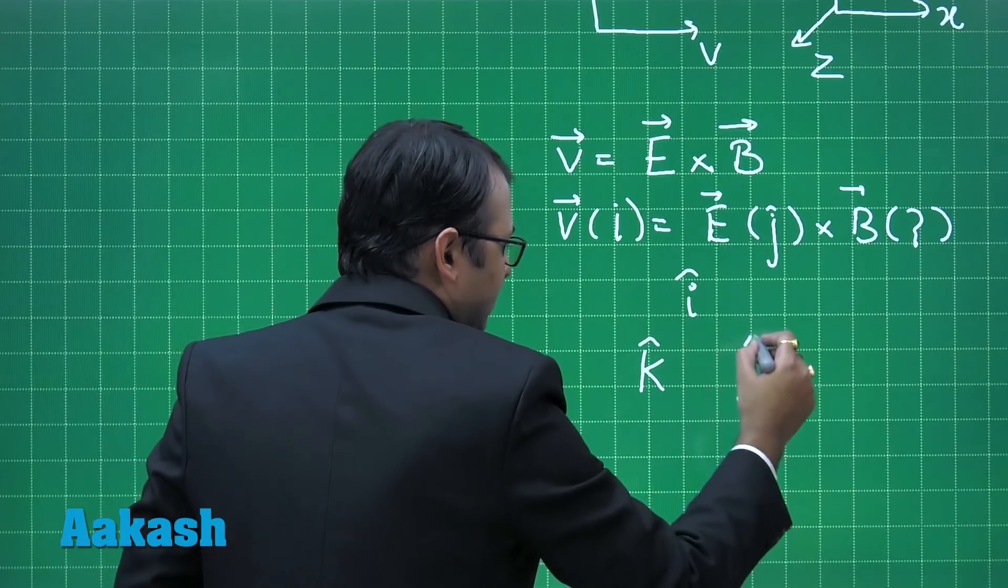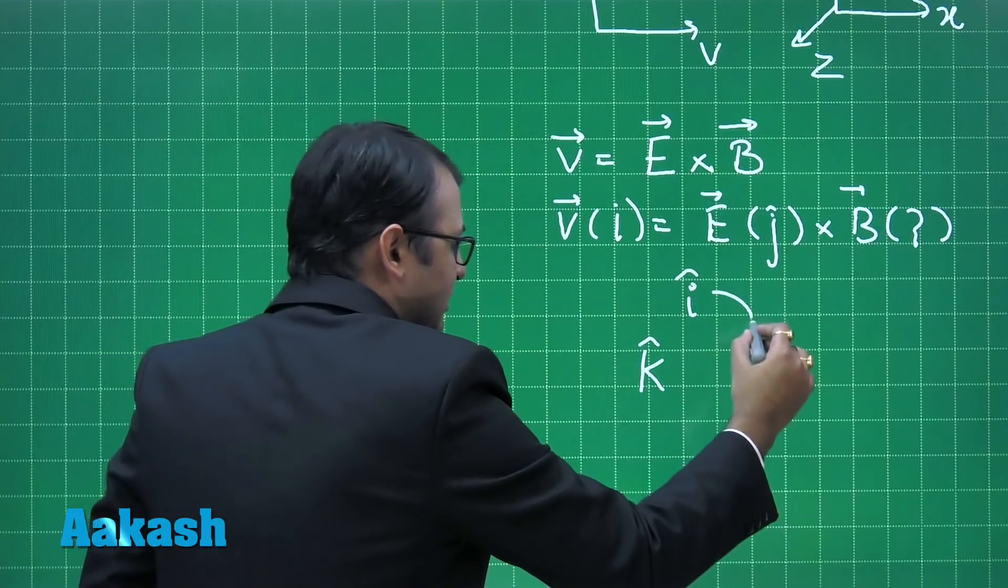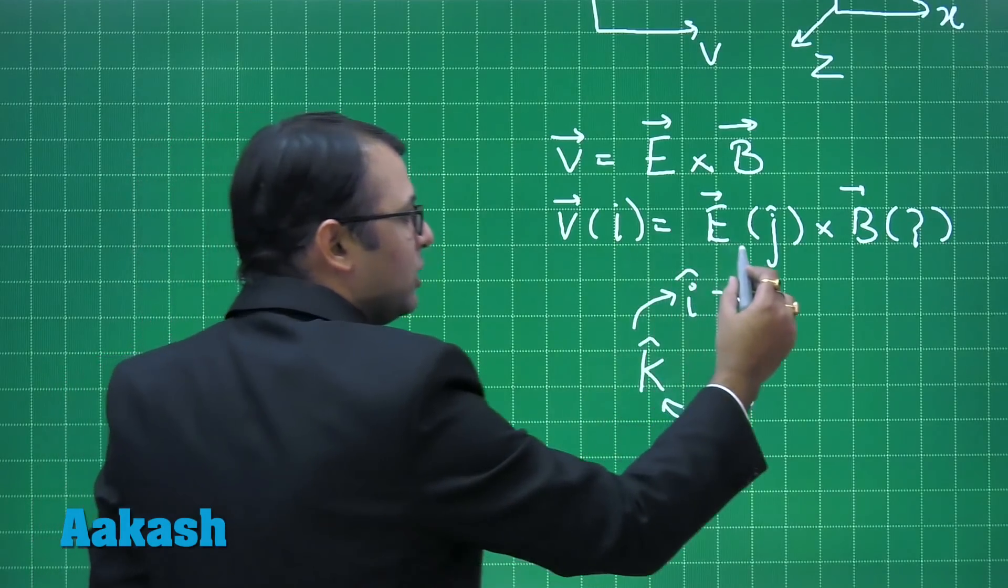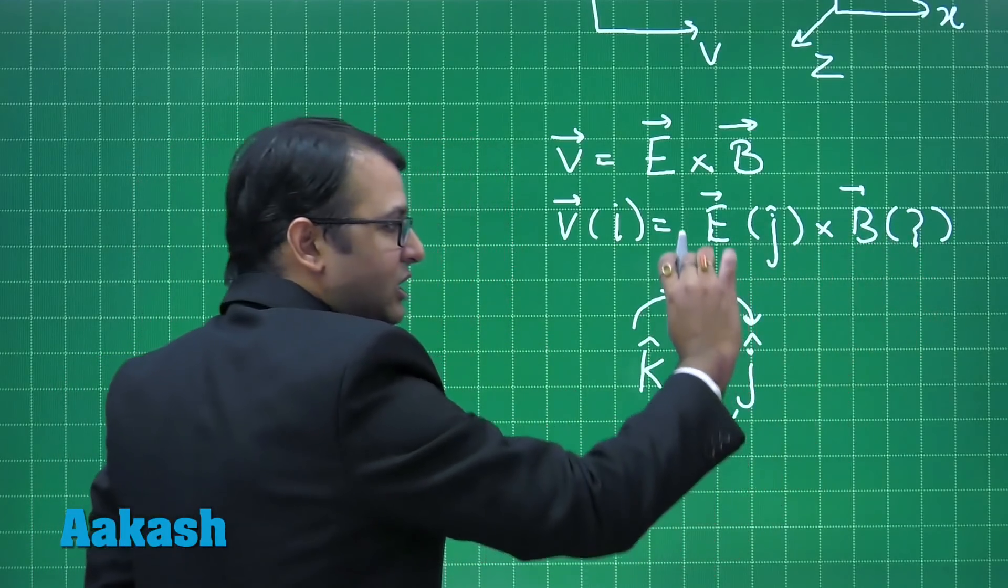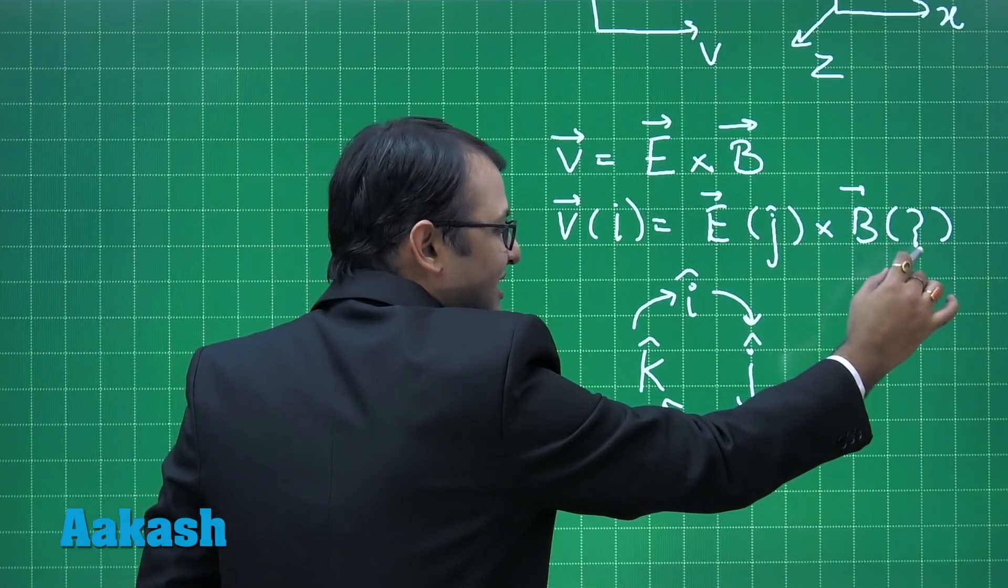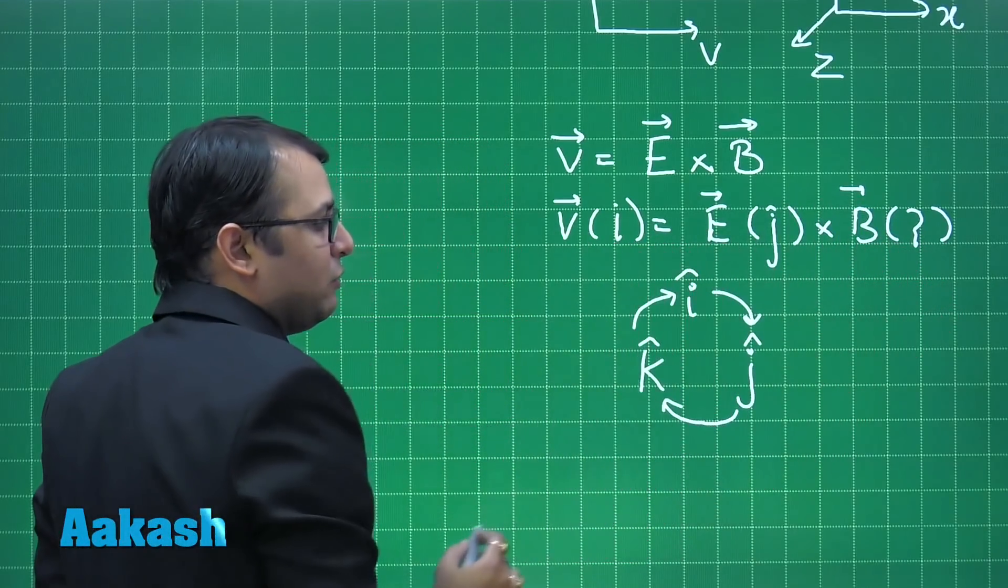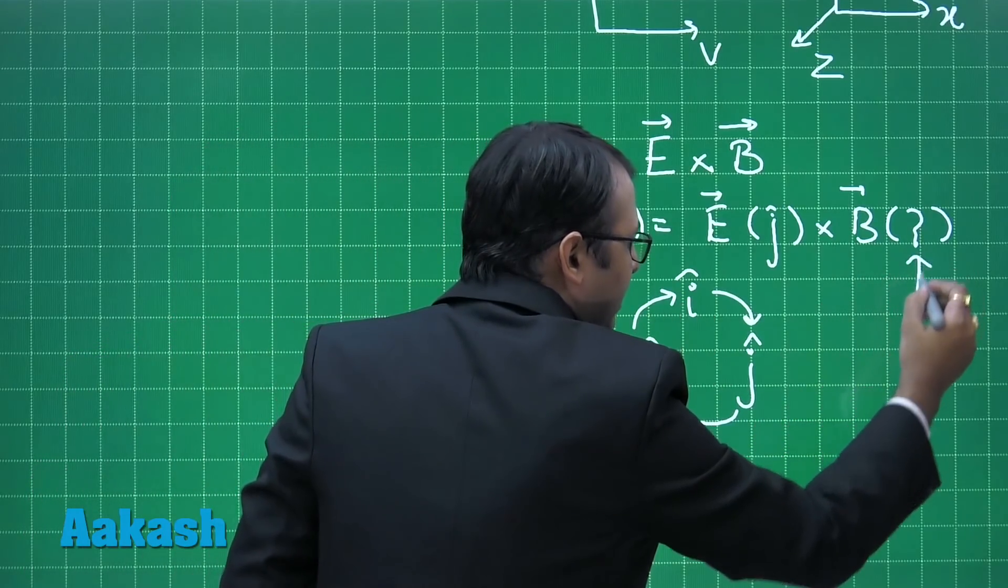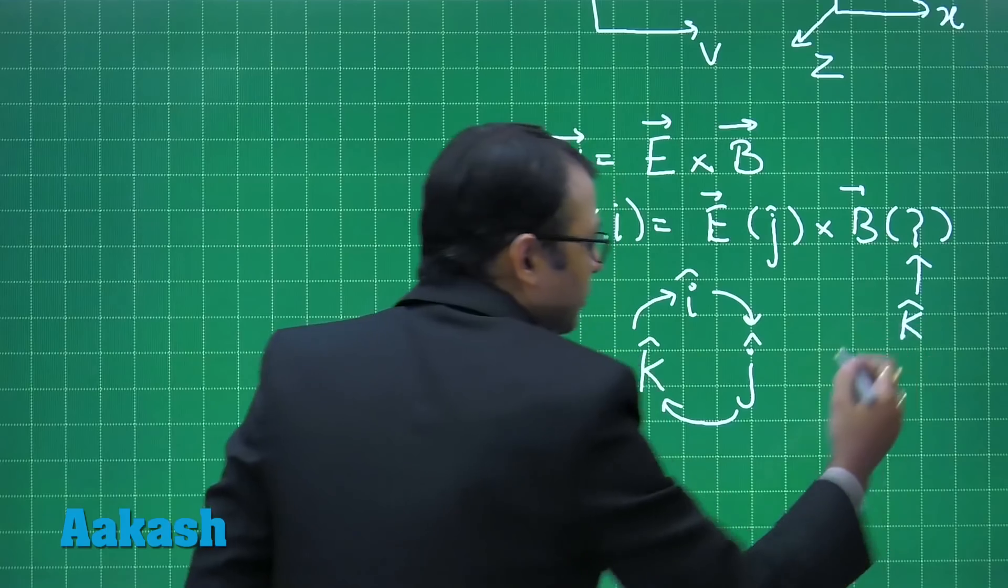These are the three unit vectors. This would be the cycle. So if I want to multiply anything with j, that j should be cross multiplied with this quantity so that we can get i. What it would be? J cross k will give us i. So certainly here what will be coming? k cap.